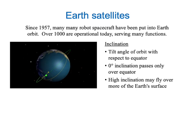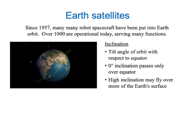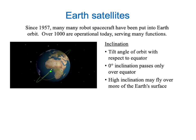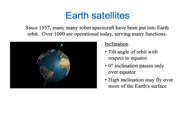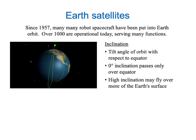But a satellite with a higher inclination may fly over more of the Earth's surface as the Earth rotates. That might be very important for a satellite that is looking at the ground, taking pictures of the ground, for example. If you make the inclination 90 degrees — a polar orbit — then the satellite actually passes over every point on the surface of the Earth.